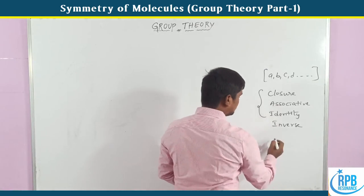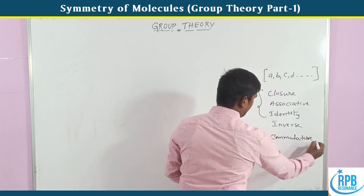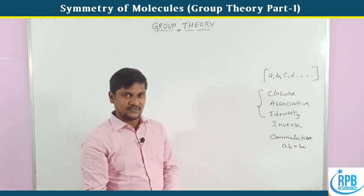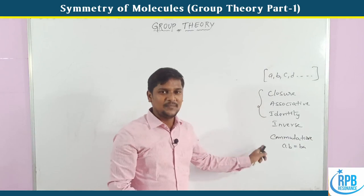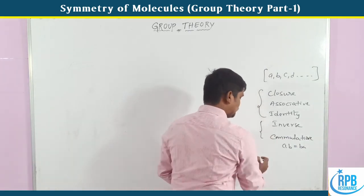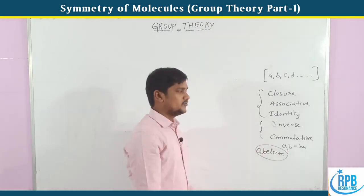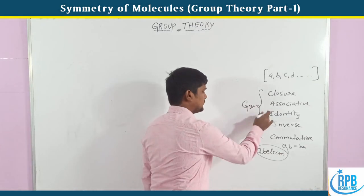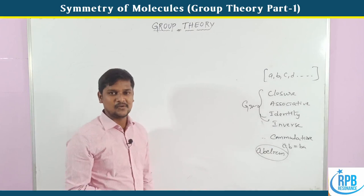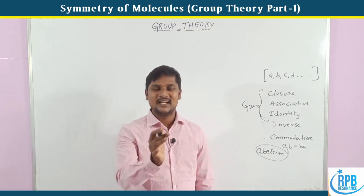Along with a group, if it obeys the commutative law - we know that commutative law means A·B equals B·A - so when a group obeys all four laws plus the commutative law, that is called an Abelian group. So the first four terms define a group; a group along with the commutative law gives the Abelian group. These are the mathematical definitions regarding the group and Abelian groups.